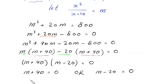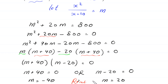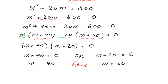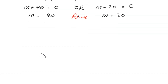From the first factor, m equals negative 40. From the second factor, m equals 20. Now recall that x squared over (x plus 10) equals m.